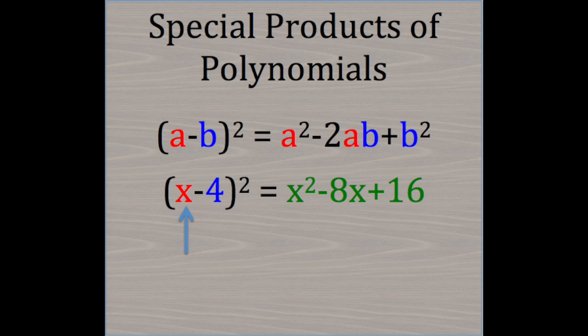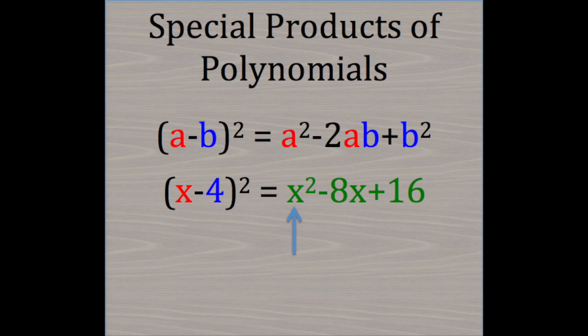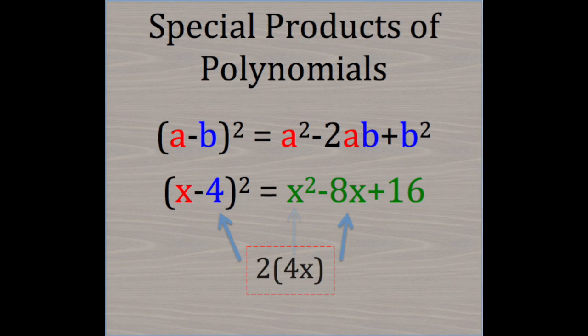In our example, our a value is x, which gets squared, giving us x². Our b value is negative 4, which gets multiplied by both our a value and the number 2, giving us negative 8x.